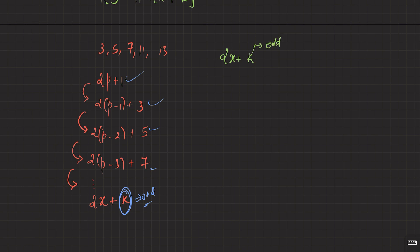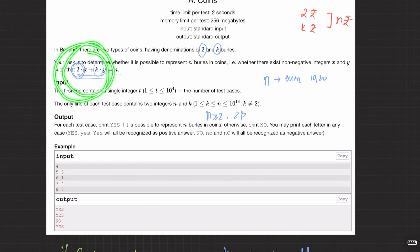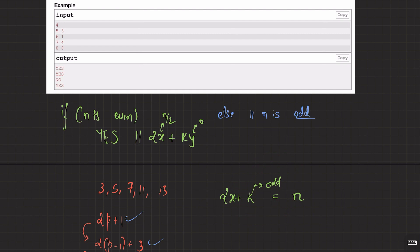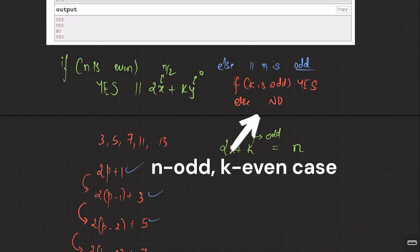So what we found is: any odd number n can be represented as 2x + k where k is odd. That's exactly what we want here — we want to represent n as 2x + k. The condition is that k must be odd. So: if n is odd and k is odd, output 'Yes'; otherwise output 'No'.